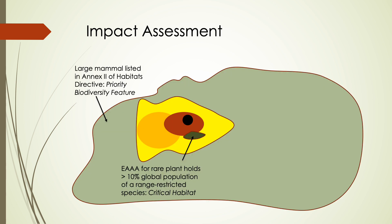Looking at our theoretical example, we can evaluate how this project might affect the viability of features in their respective ecologically appropriate areas of analysis. In the case of the rare plant, the project footprint will significantly reduce its local habitat, which will jeopardize its persistence in that area. In the case of the mammal, there is a measurable impact, but local viability is not likely reduced.